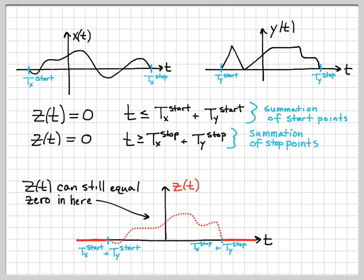So we're not saying that z of t can't be 0 there, but it will be 0 in this region for all those times below t sub x start plus t sub y start. And it will be 0 for all times in this region, all the times above t sub x stop plus t sub y stop. So remember that simple rule. You can easily find the boundaries from where z of t is guaranteed to be 0 just by a simple addition.